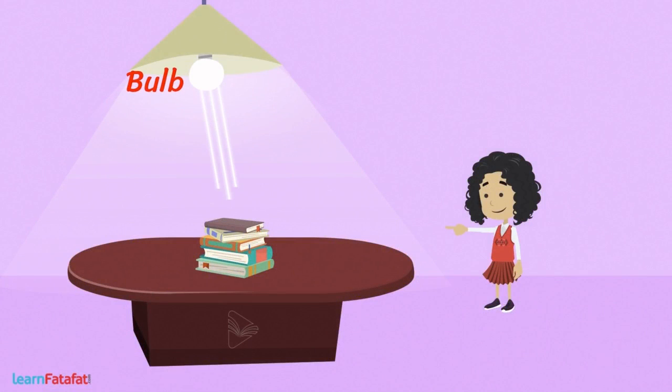For example, in a dark room we cannot see things unless we switch on a bulb. Light from the bulb falls on the object and undergoes reflection.